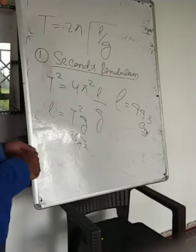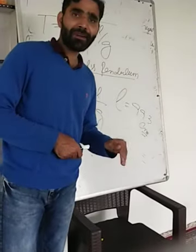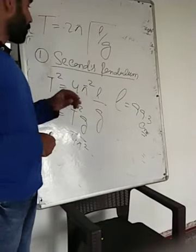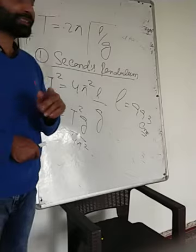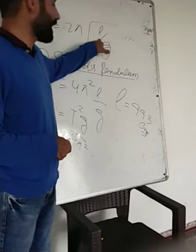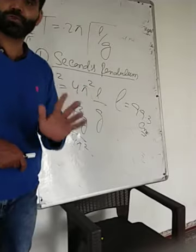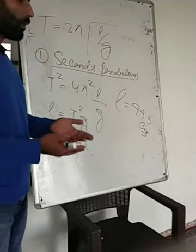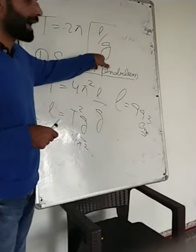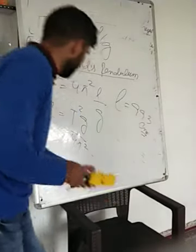One important point about the Second Pendulum: if we take it to any point — even on the Moon — its time period remains 2 seconds by definition. Because on the Moon, g changes, so we automatically have to change the length to maintain a time period of 2 seconds. So whether on the surface of Earth or on the surface of the Moon, the length and g will both change, but the time period remains 2 seconds.